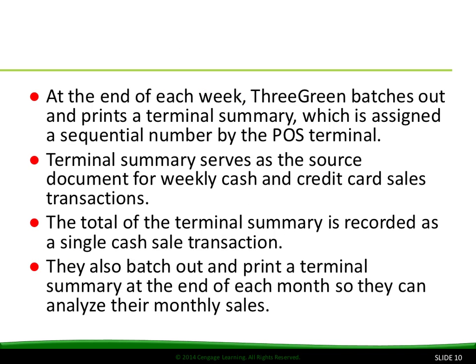At the end of each week, 3Green batches out and prints a terminal summary, which is assigned a sequential number by the POS terminal. The terminal summary serves as the source document for weekly cash and credit card sales transactions. The total of the terminal summary is recorded as a single cash sale transaction. They also batch out and print a terminal summary at the end of each month so they can analyze their monthly sales.